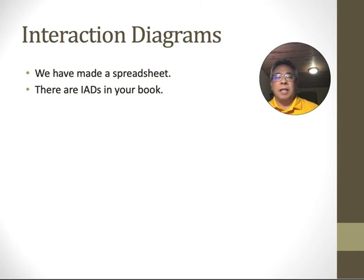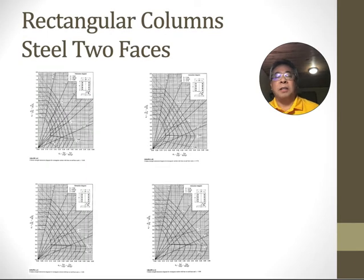There are plots of all combinations of P and M that cause a column to fail. I've made a spreadsheet that does that. There are also interaction diagrams in your book. I've scanned a bunch of them and posted them for you to use.